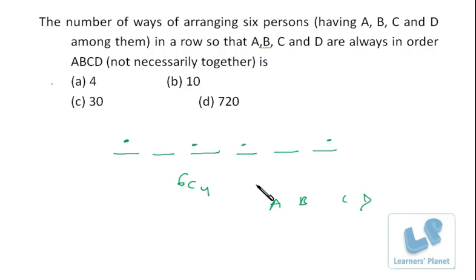So we selected four places for ABCD and made them set in just a single way. Now we are left with two places and two people, so two places, two people—they can set in 2 factorial ways.